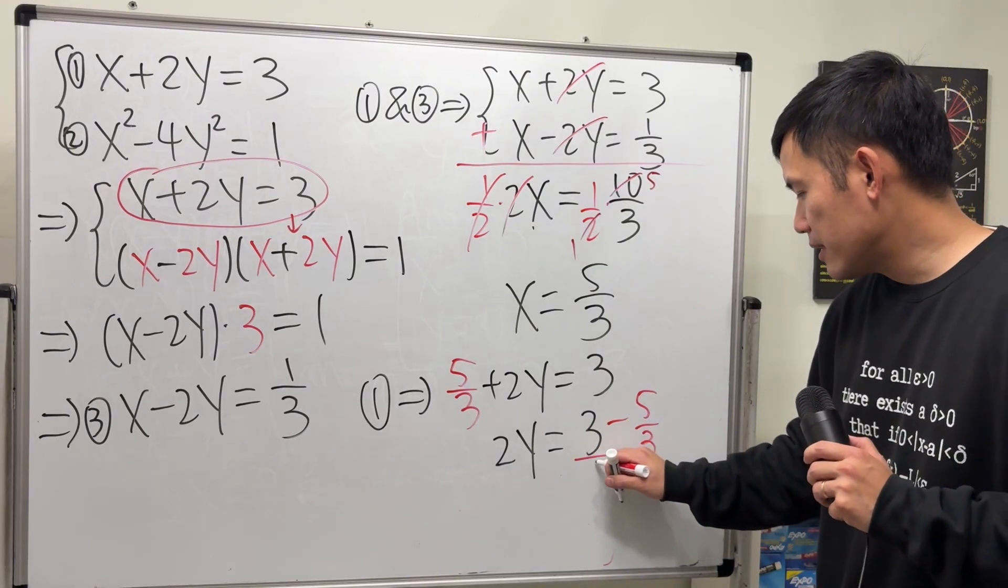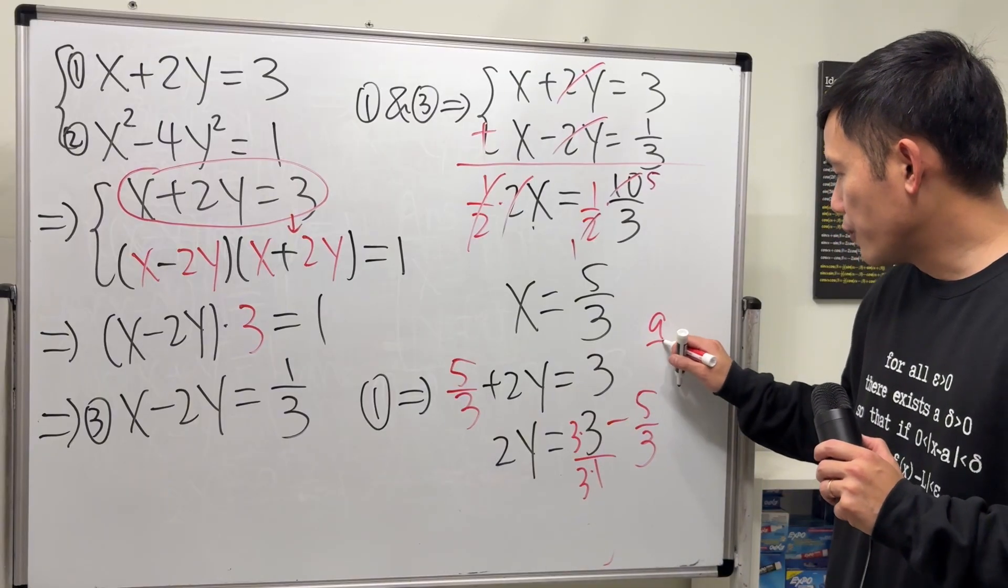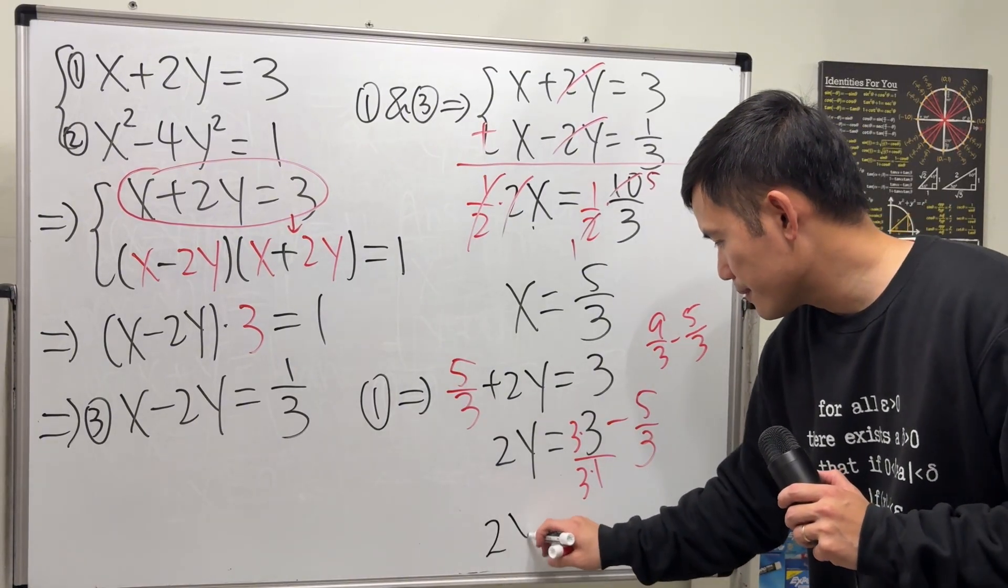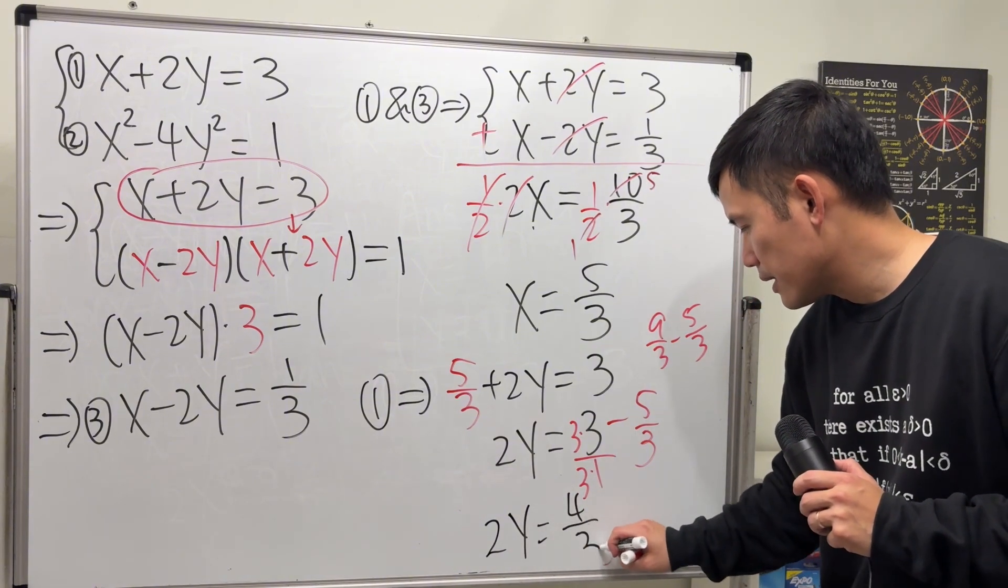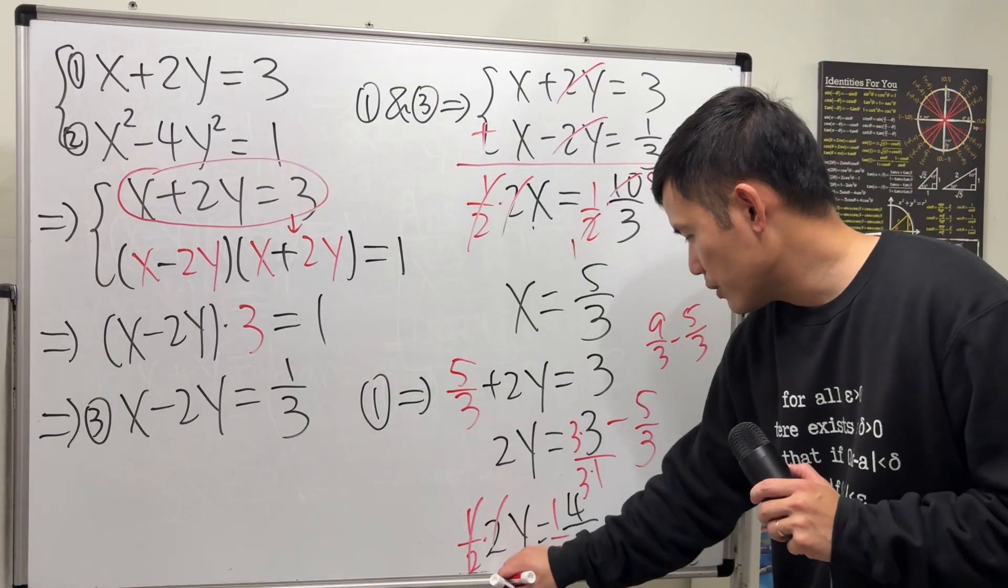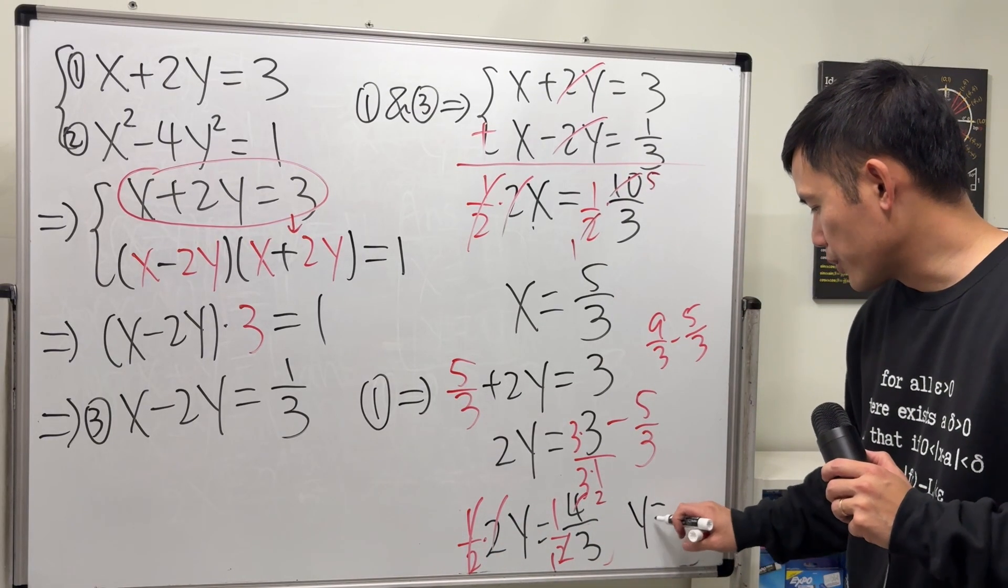And then get a common denominator again. So it's like multiplied by 3. So this is 9 over 3 minus 5 over 3, which is 4 over 3. And then I'm going to multiply by 1 half again. Cancel. So reduce here. We get y equals 2 thirds.